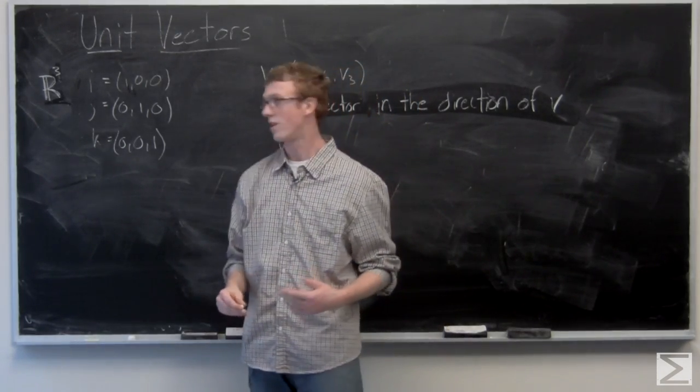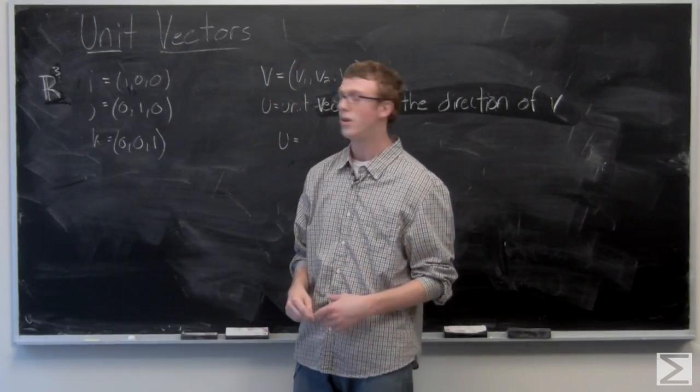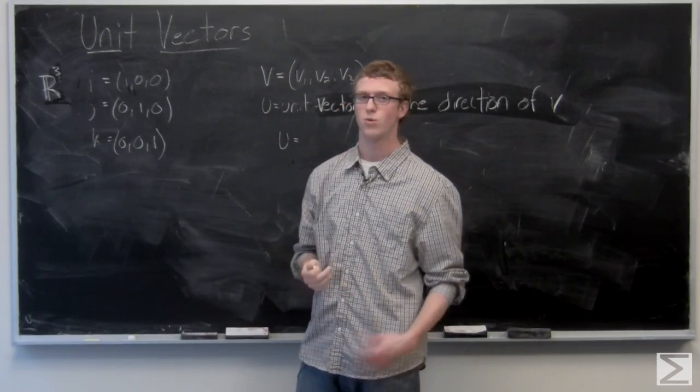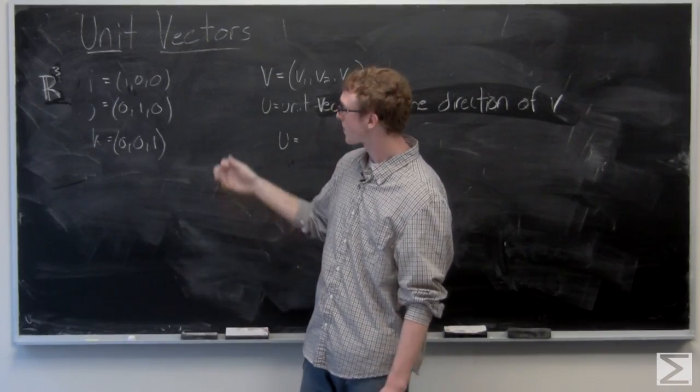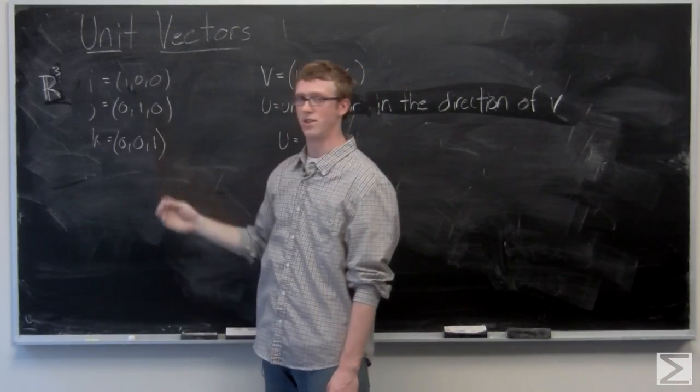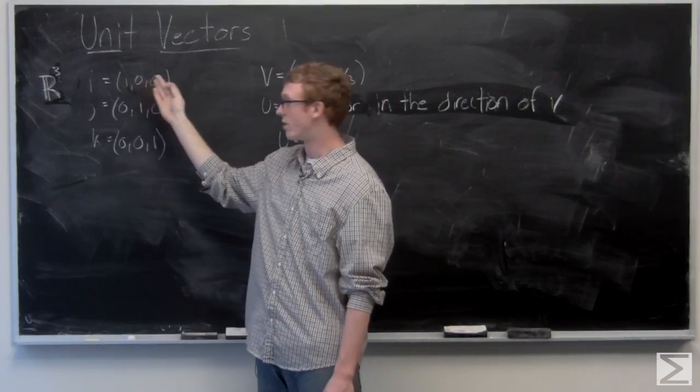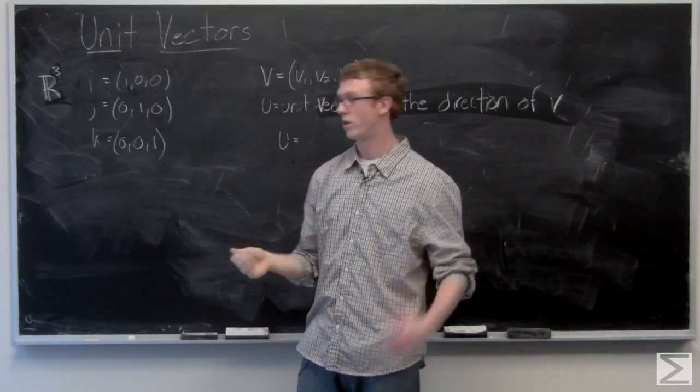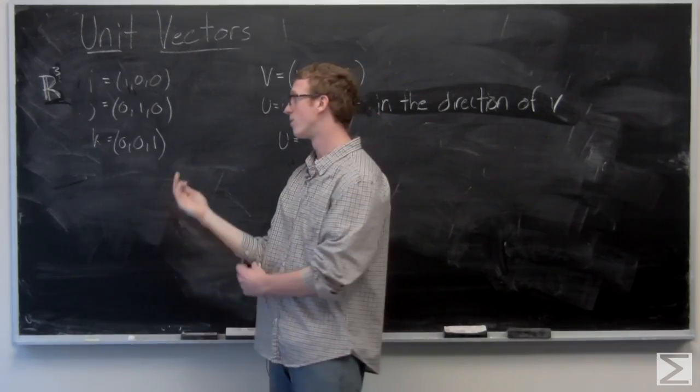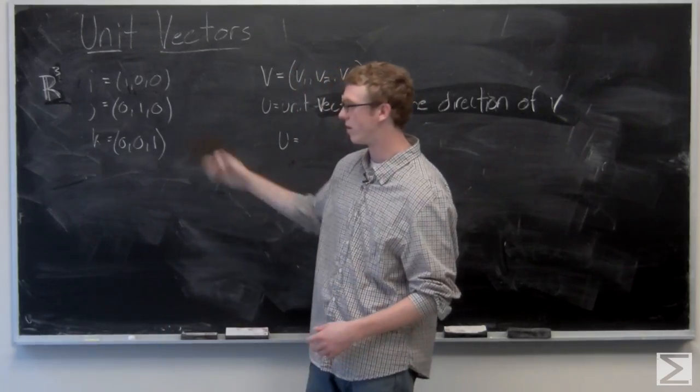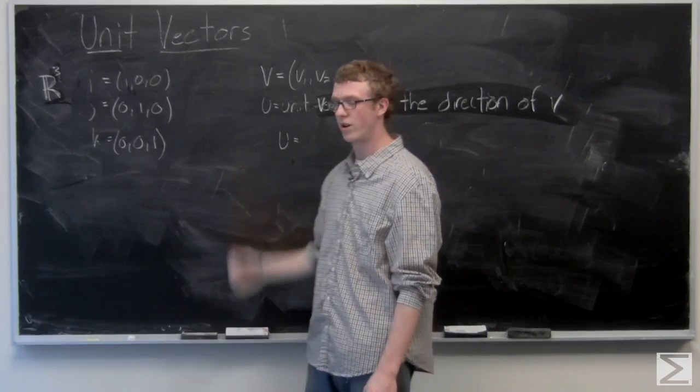As you can tell, the magnitude of all those vectors is going to be 1 because the magnitude is the square root of the squares of each component added together. So this is going to be the square root of 1 squared plus 0 squared plus 0 squared which is 1. Again, 0 squared, 1 squared, 0 squared added together is 1, and then the square root of 0 squared, 0 squared, 1 squared is 1.